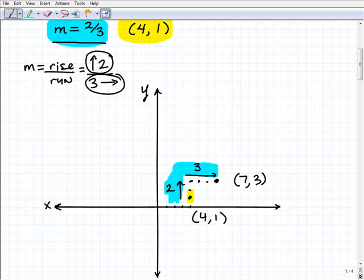And now we have two points that are on that line, you can simply just go ahead and draw our line through it. So this is the graph of a line with the slope of 2/3 that goes through the point (4, 1).